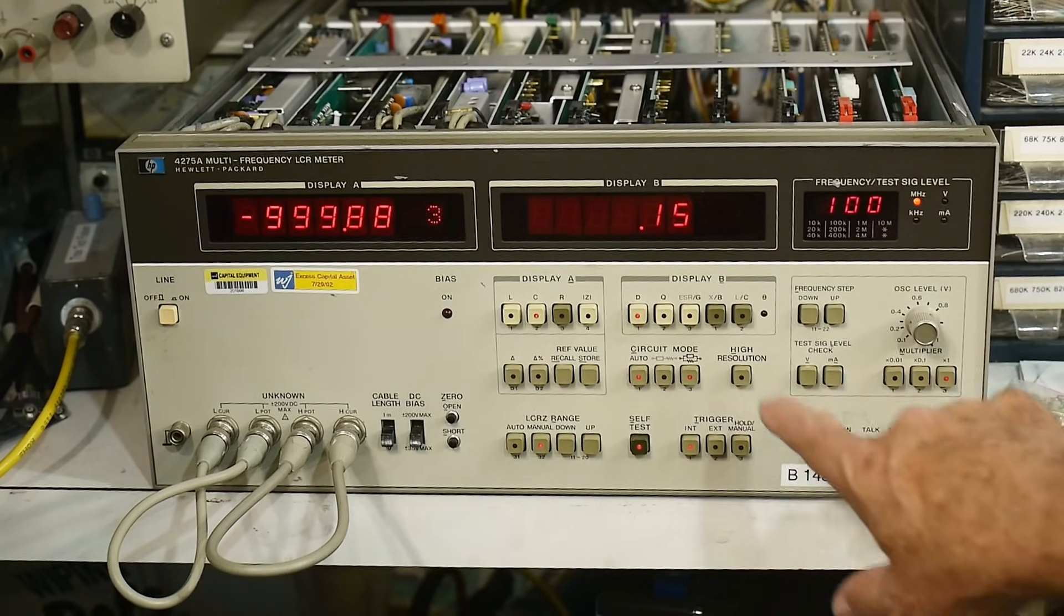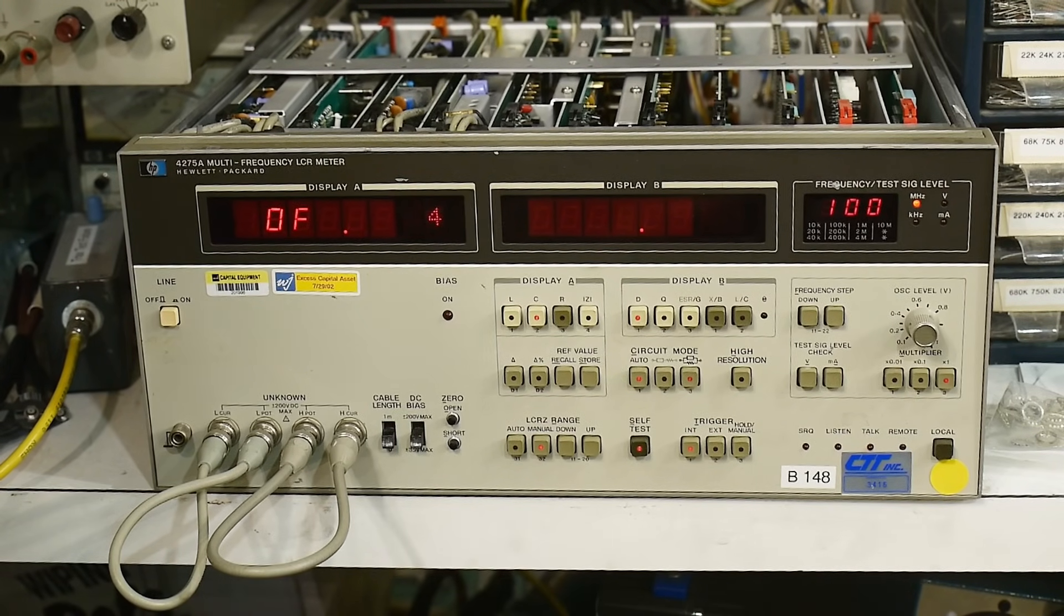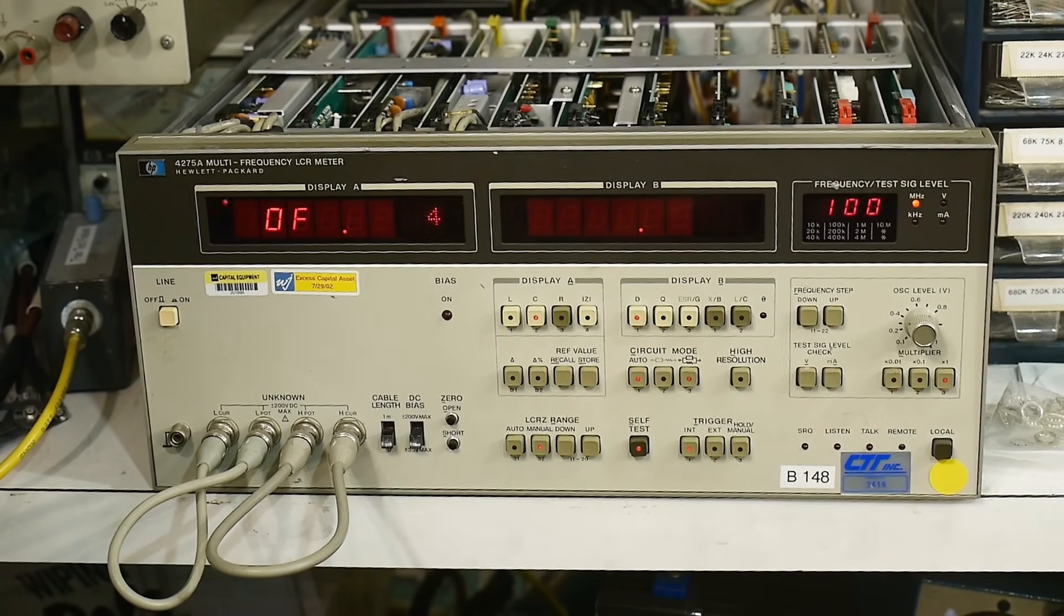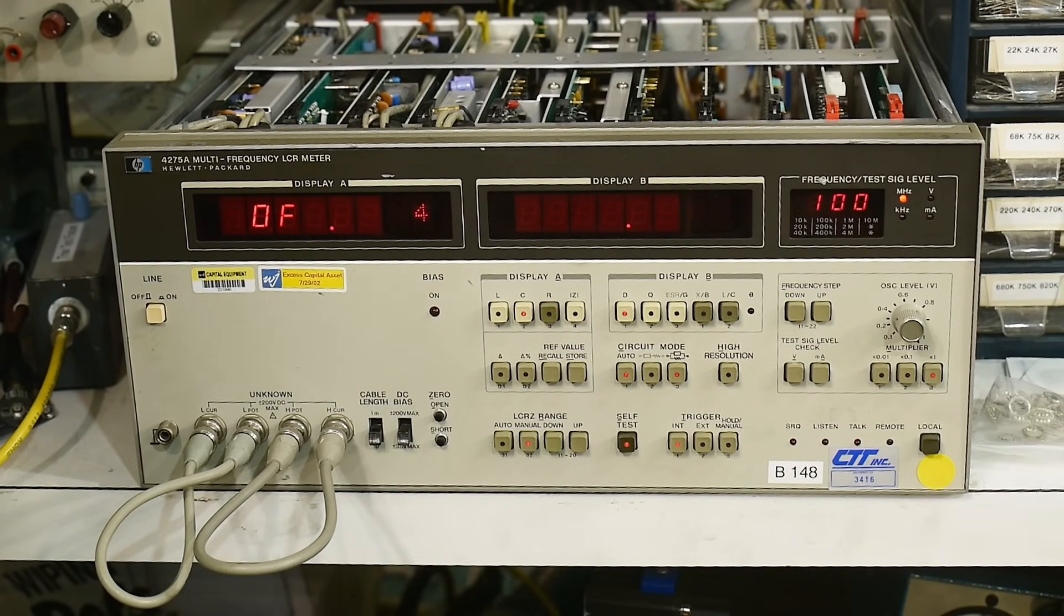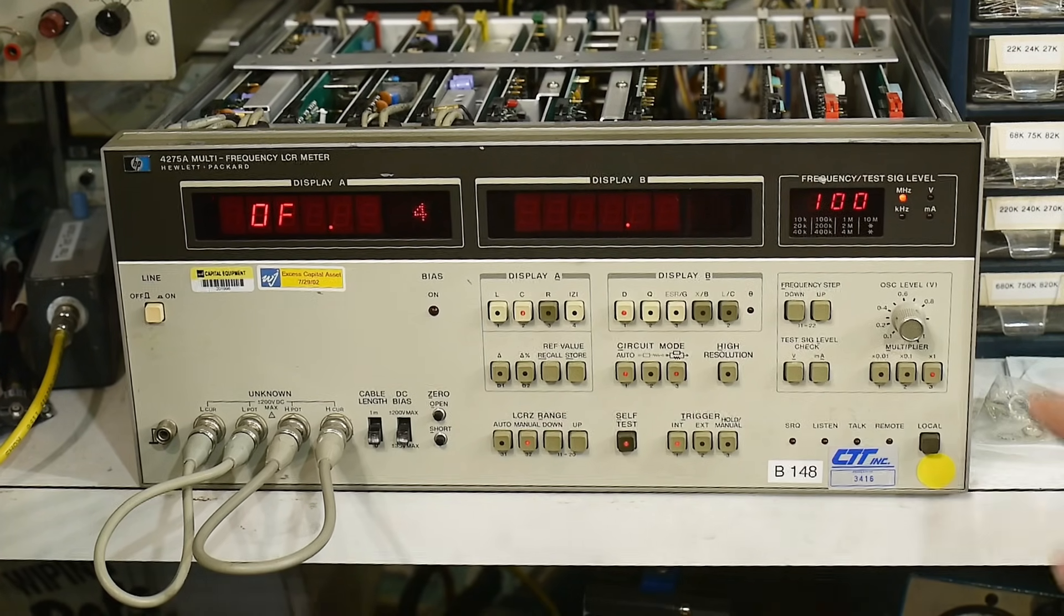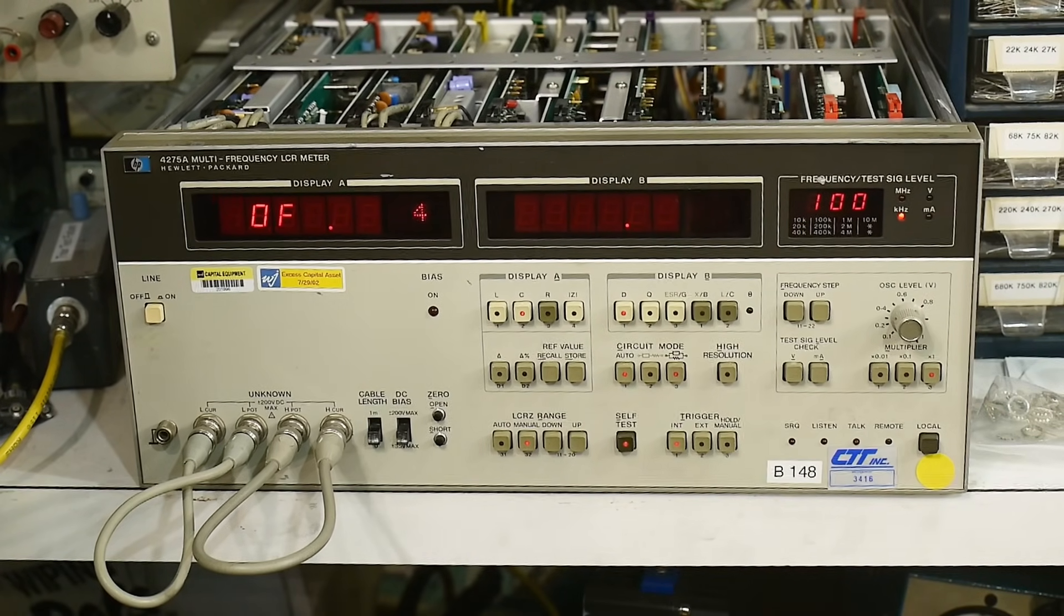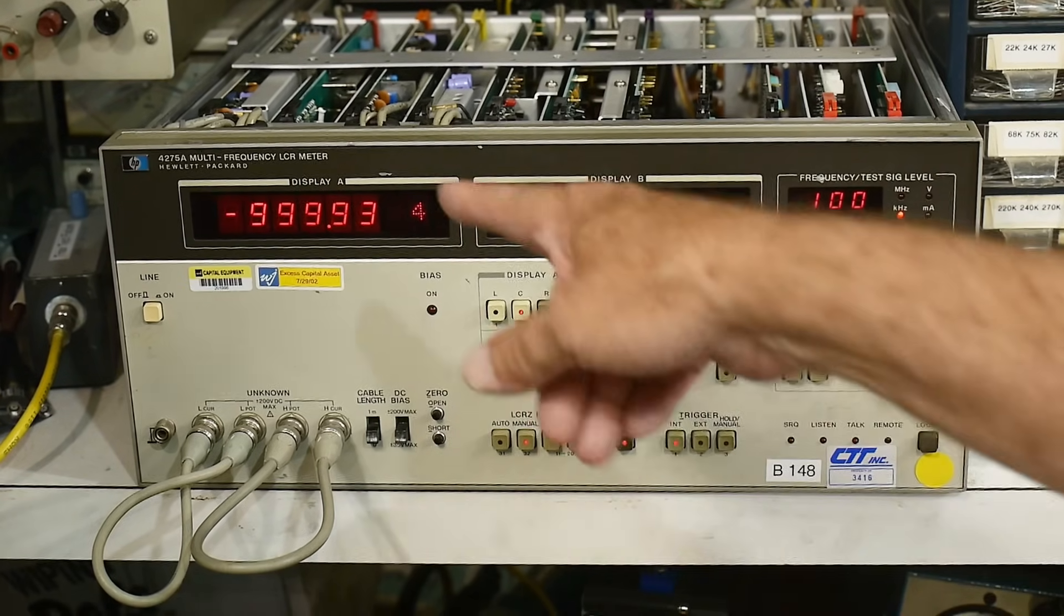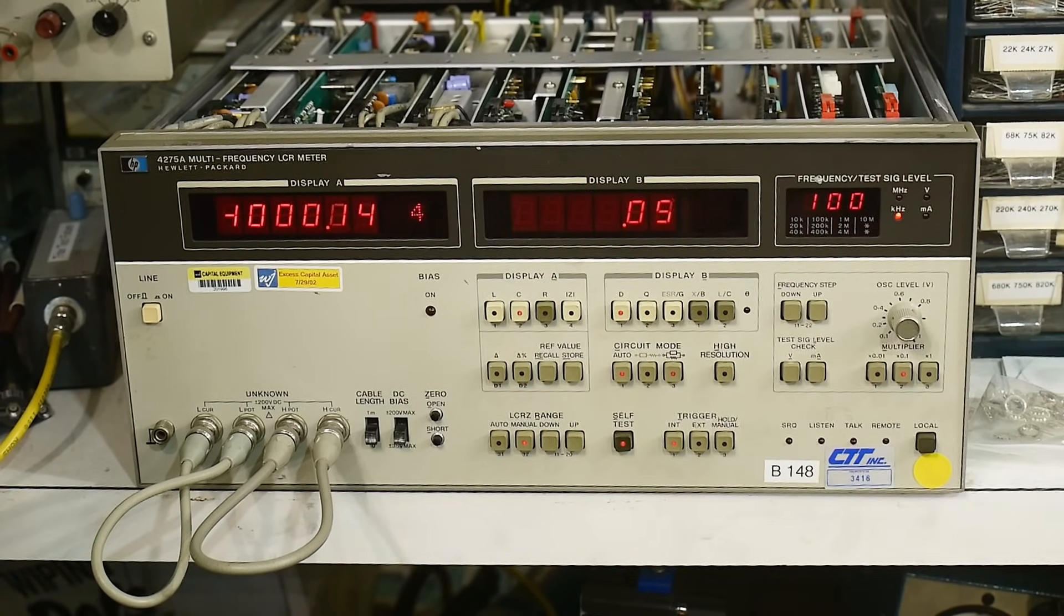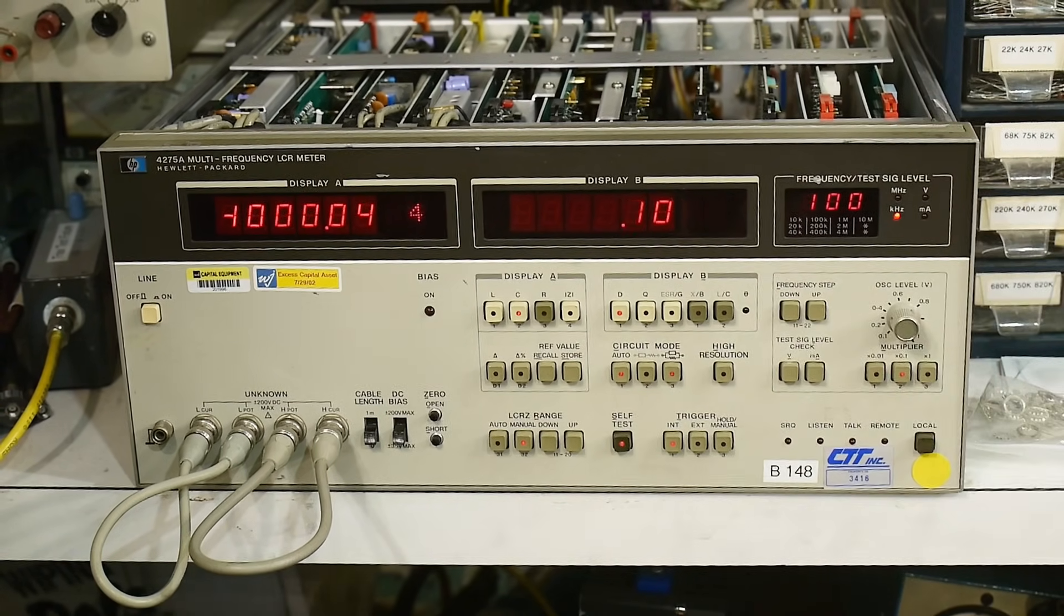Now we do the XB button. Test number 4 is displayed. Set the test signal as in 7 times 1, 100 kilohertz, except set the multiplier to 0.1. Repeat 8, 9, and 10. We're getting our minus 1,000 and 0. We'll go up to a megahertz. Same thing. Everything is fine.